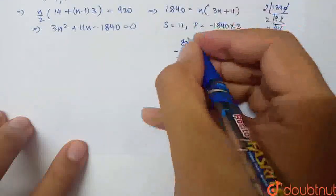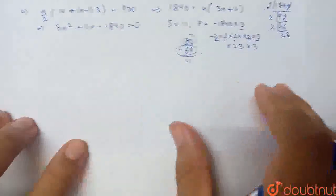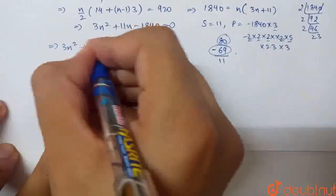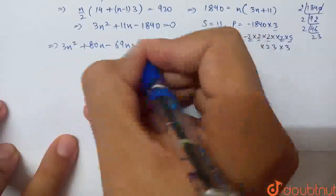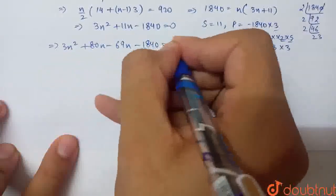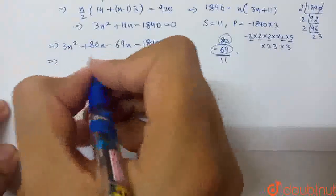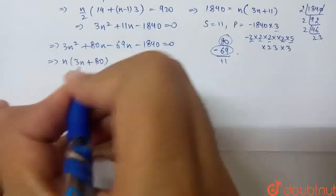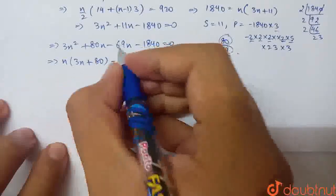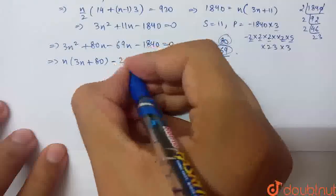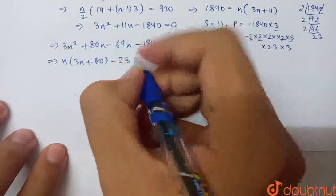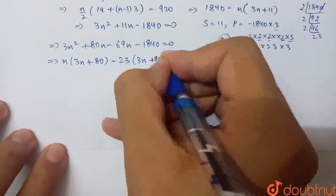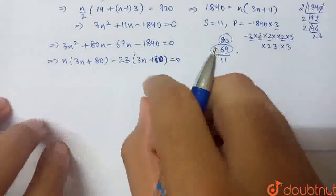Basically, we have 80n and -69n. I will use these two to factorize. 3n² + 80n - 69n - 1840 = 0. Here n(3n + 80) is common. And here, 23 is common, so 23(3n + 80). This equals 0.